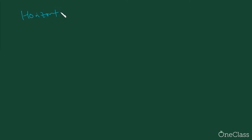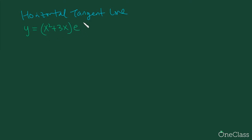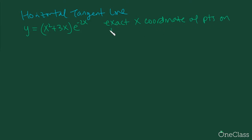This problem deals with a horizontal tangent line. Say for example there is a function y = (x² + 3x) multiplied by 2 to the power of negative 2x. The question says: find the exact x-coordinate of the points on the curve where the tangent line is horizontal.